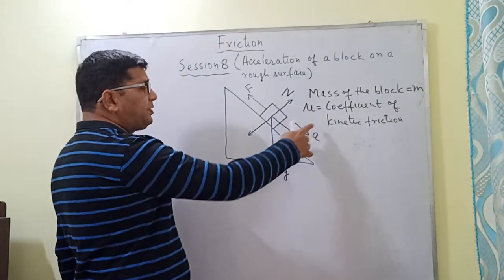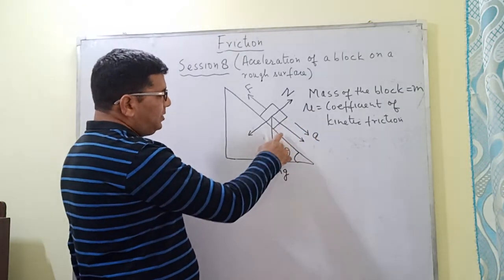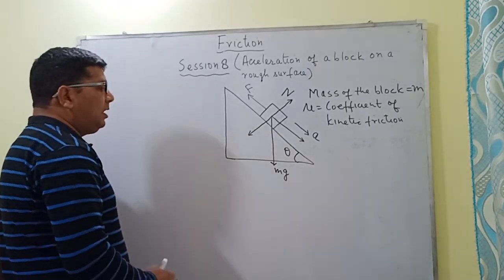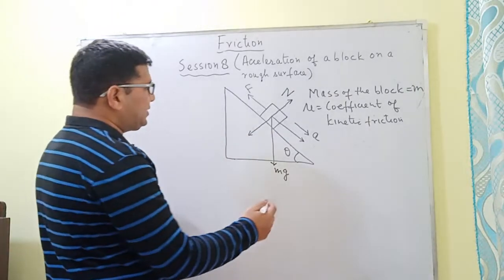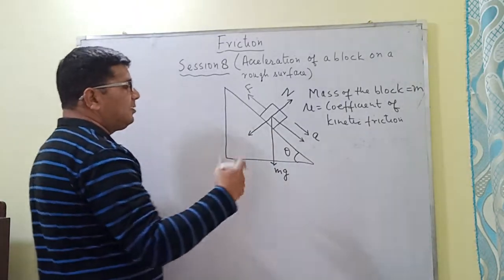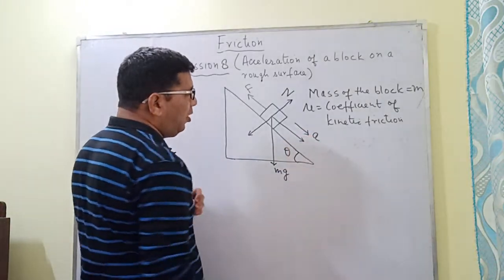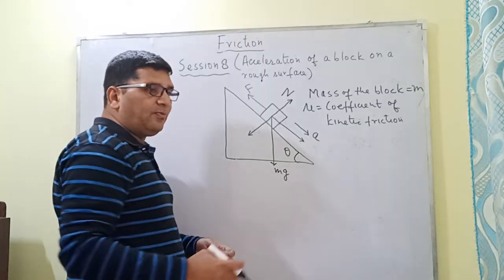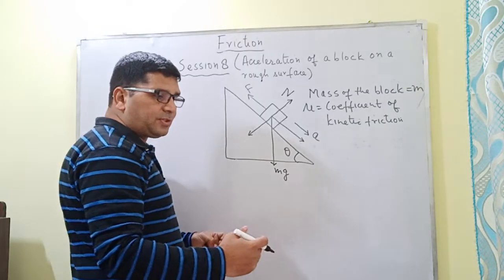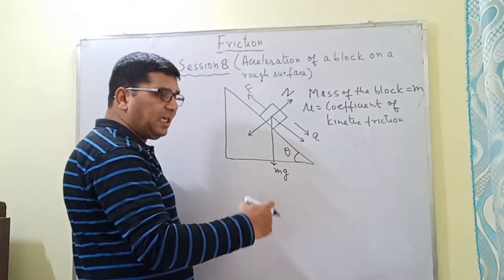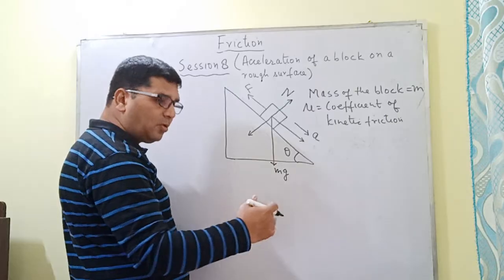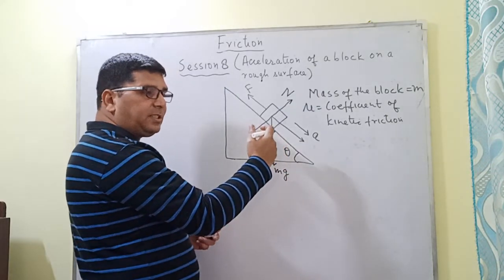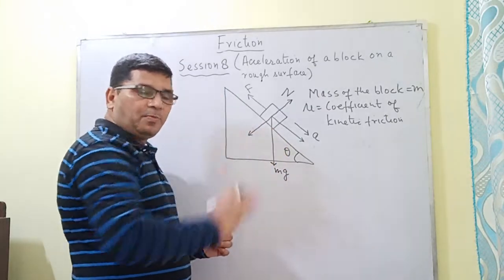This is the coefficient of kinetic friction between the inclined surface and the block. The block will move in a particular direction only when the net force acting on it in that direction is greater than the net force acting in the opposite direction.